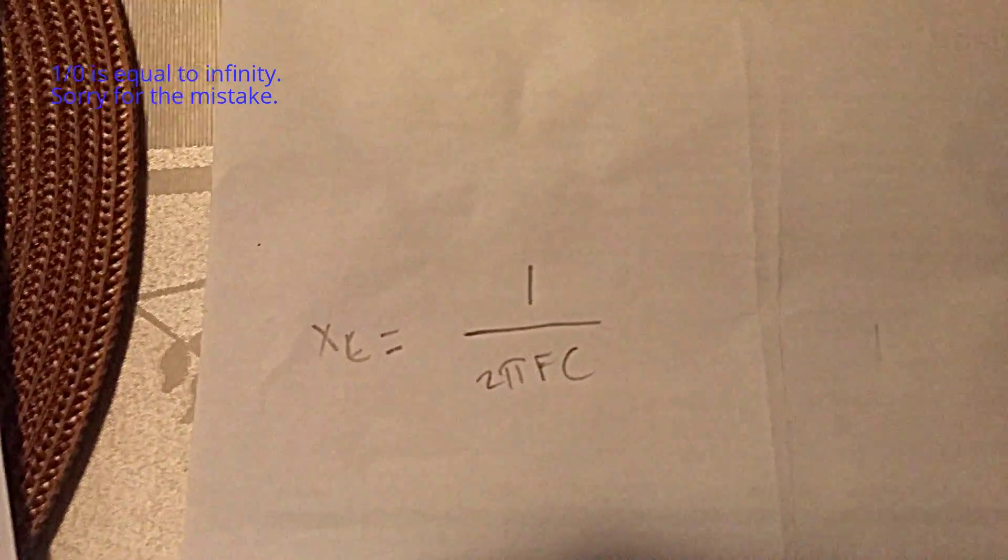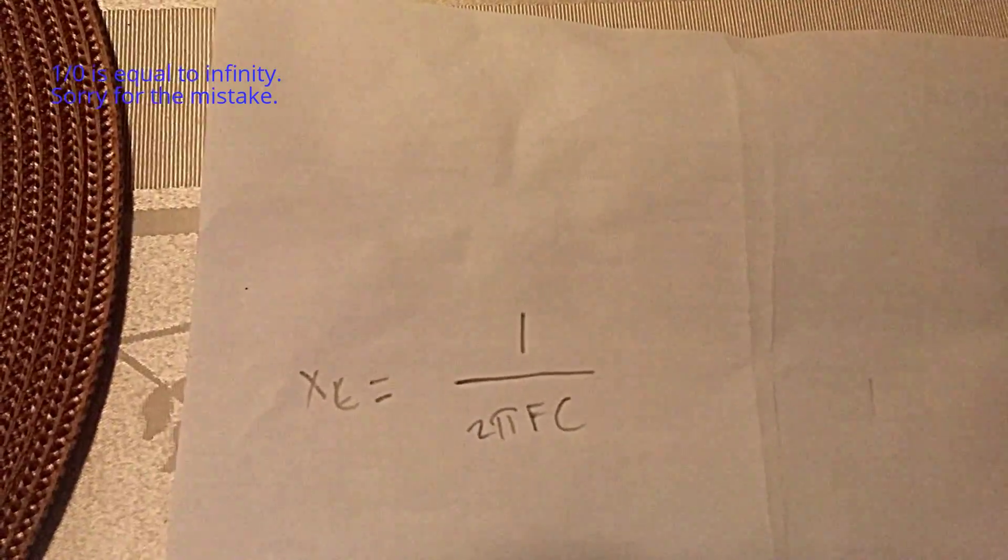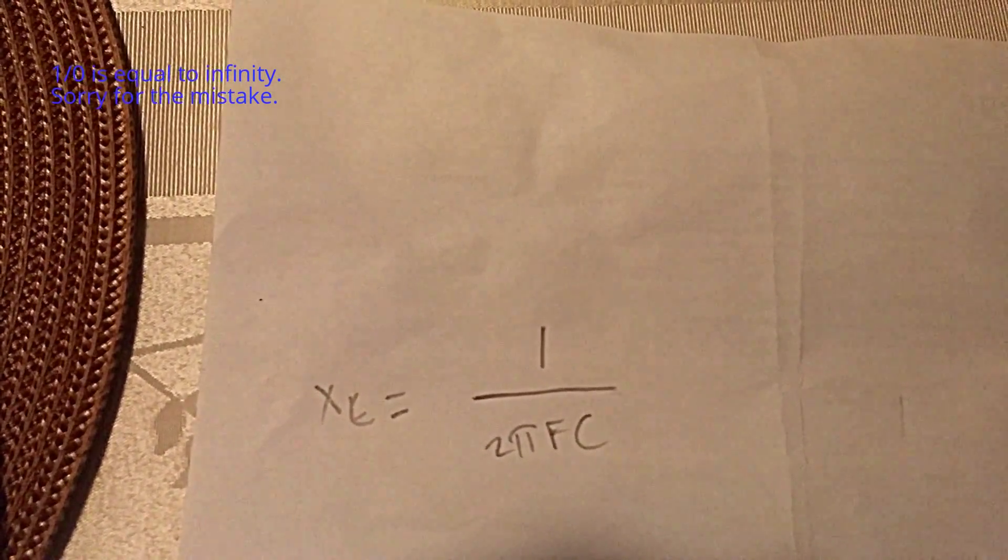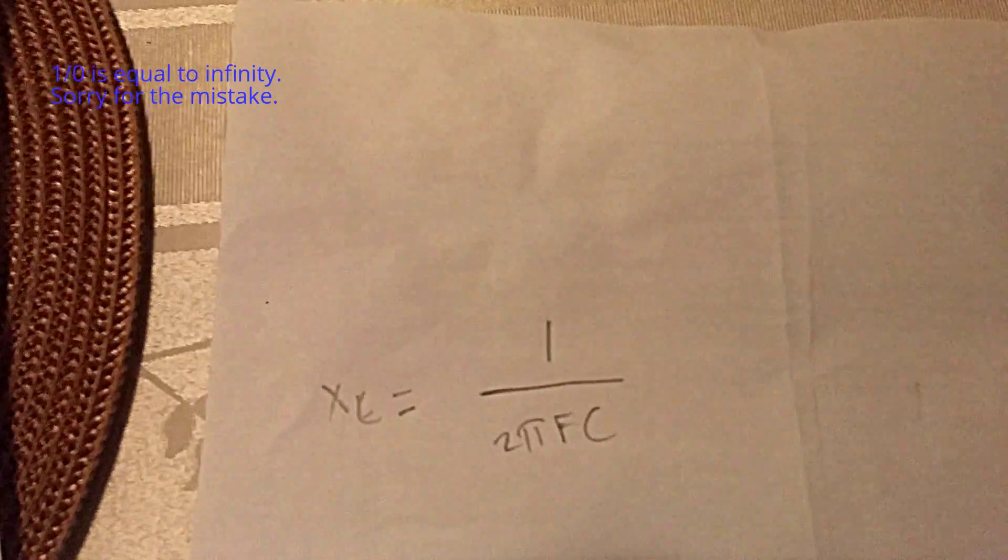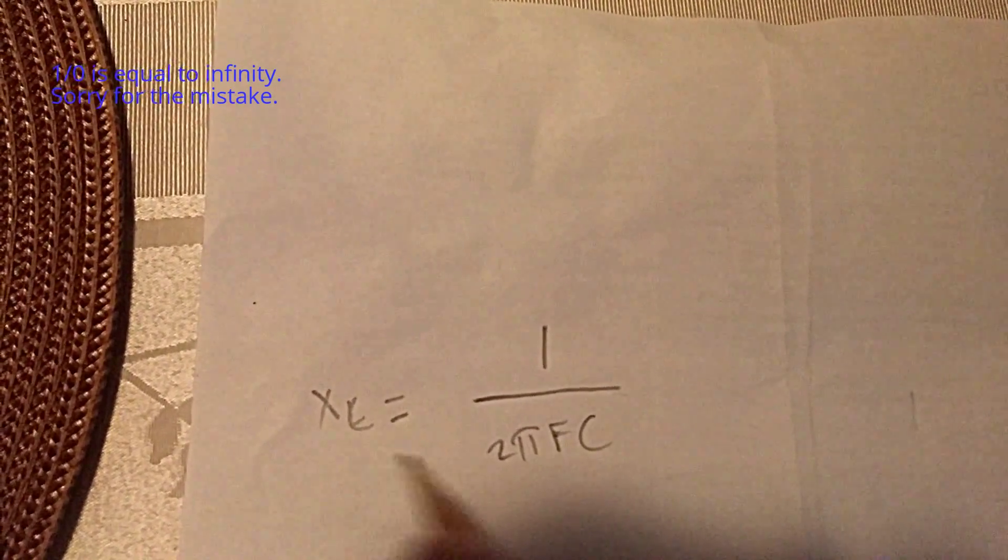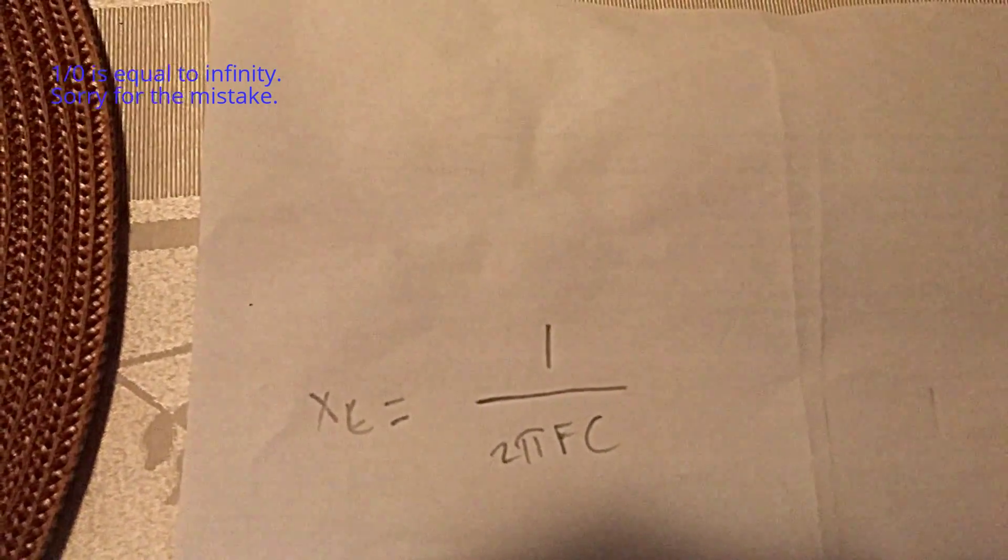If you don't know what capacitive reactance is, go look it up. But this is going to be a simple definition on why alternating current is allowed to a capacitor. So we know that Xc, which is X sub C, which is capacitive reactance, is dependent upon these factors.